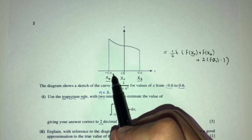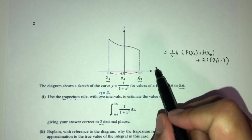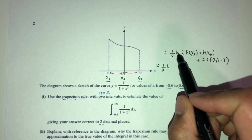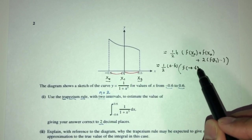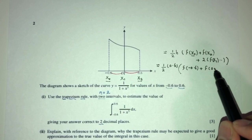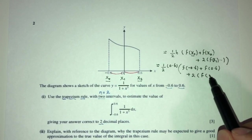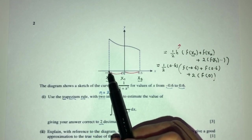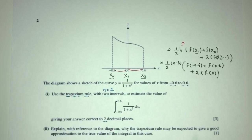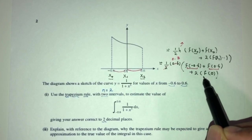The trapezium rule is just a formula — h is the width of each interval. This simplifies to 0.3 times the bracketed terms. Now we find each value: f(−0.6) = 1/(1 + (−0.6)³) = 1.2755; f(0.6) = 1/(1 + (0.6)³) = 0.8224; and f(0) = 1/(1 + 0) = 1.